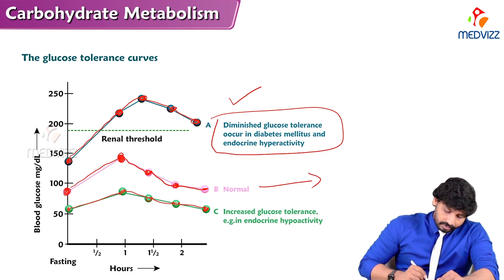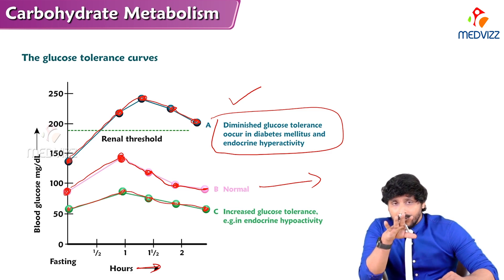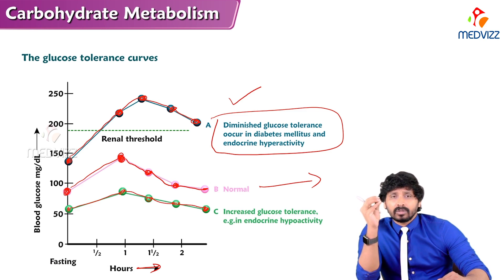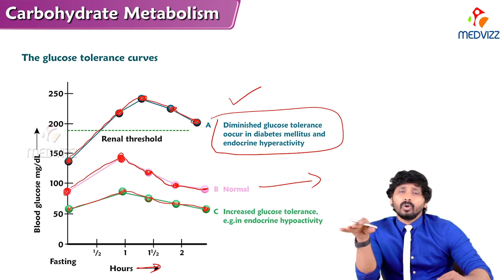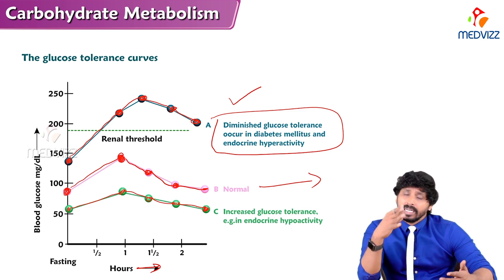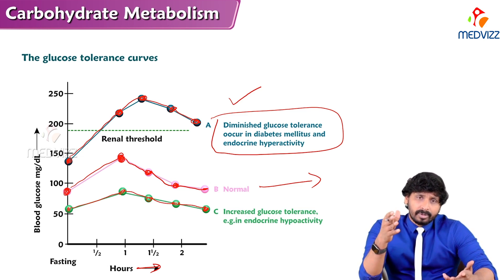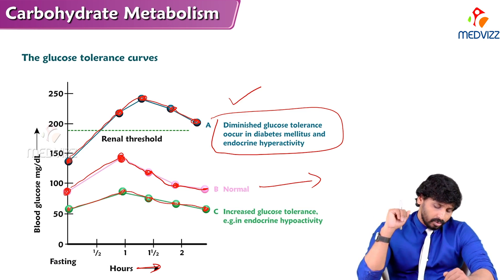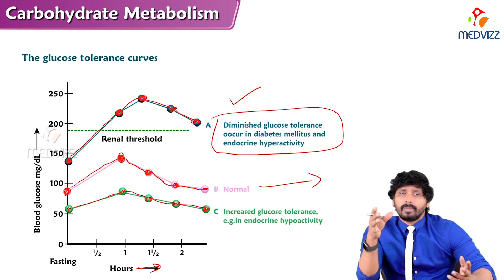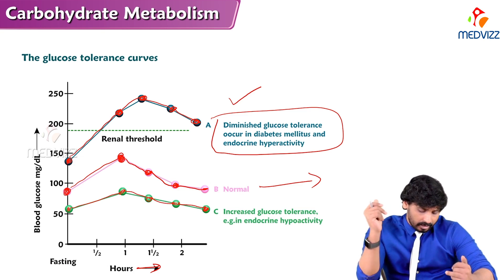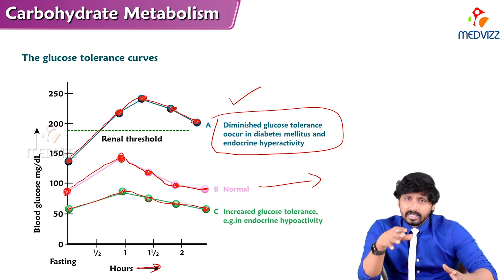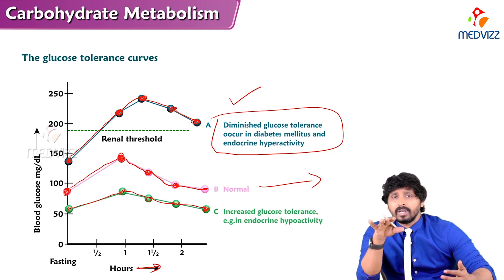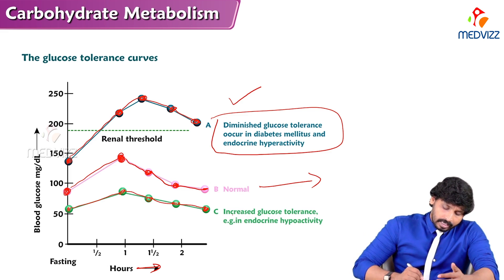In summary, after one hour blood glucose rises, but after 2 hours insulin action brings it back down — this is the normal pattern. In diabetes mellitus, insulin is absent or there is insulin resistance, so blood glucose remains elevated, showing decreased glucose tolerance. In hypothyroidism, hypopituitarism, and Addison's disease, gluconeogenesis is impaired because the relevant hormones are absent, so blood glucose falls and shows increased glucose tolerance.